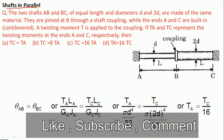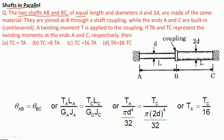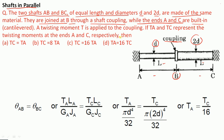Shaft in parallel problem: two shafts AB and BC of equal length with diameters D and 2D are made of the same material. They are joined at B through a shaft coupling while ends A and C are built-in (cantilevered/fixed). A twisting moment T is applied to the coupling.